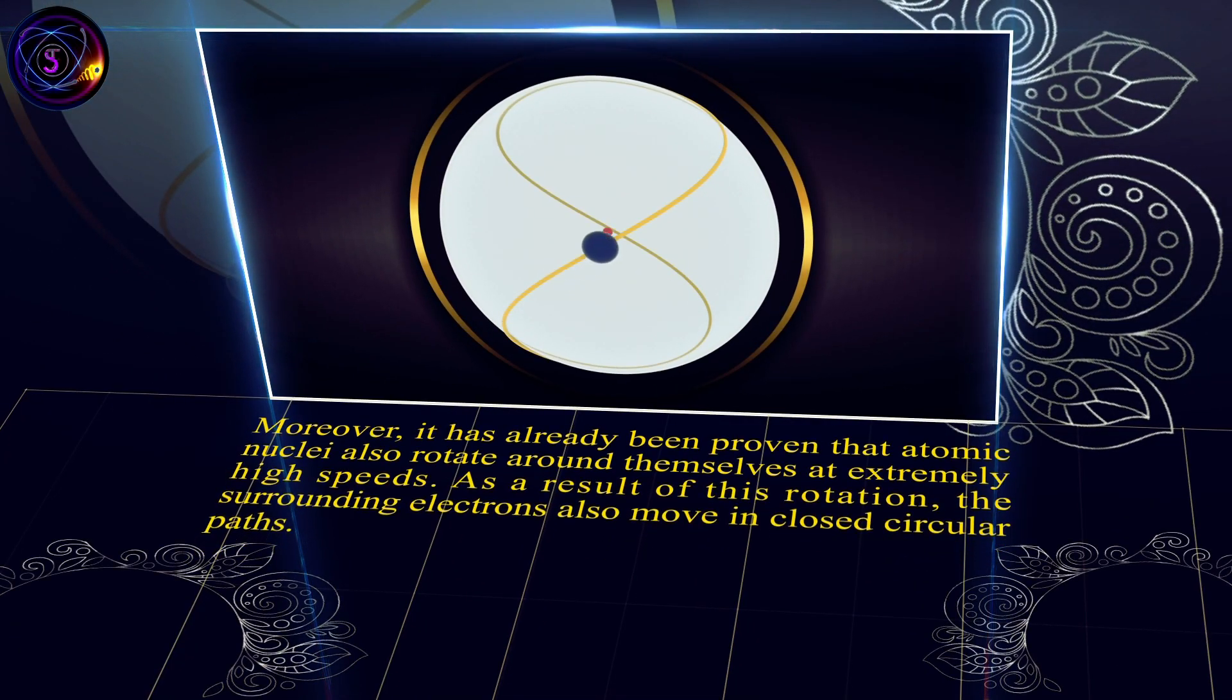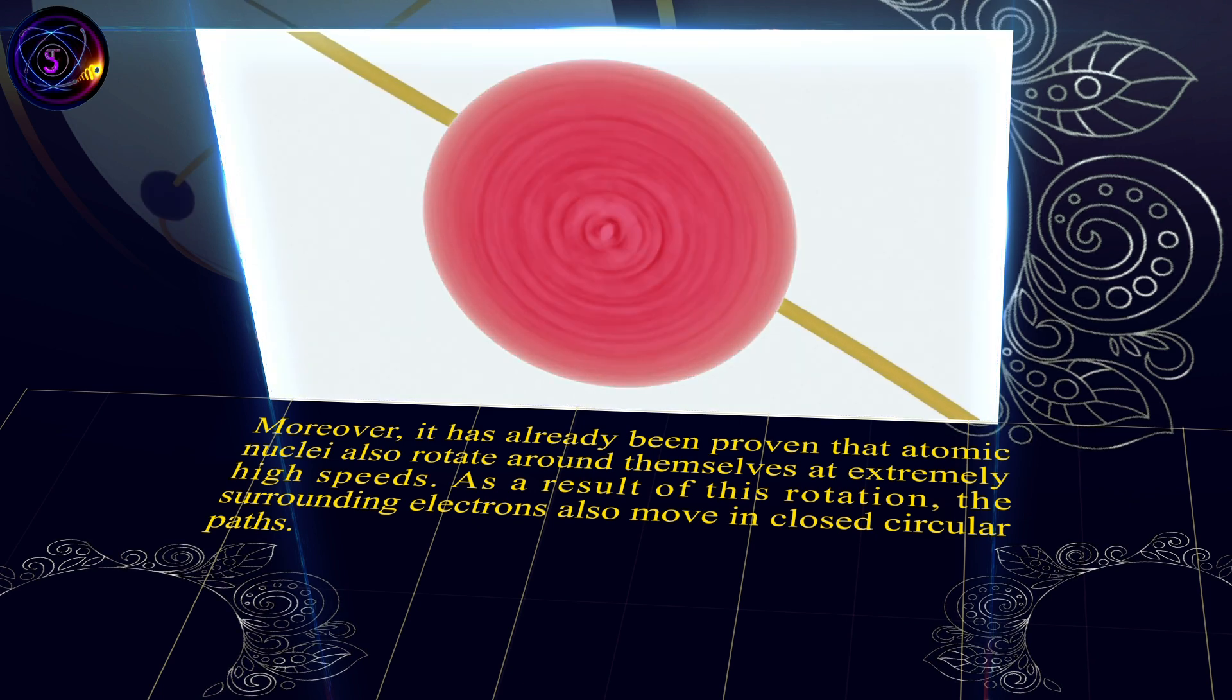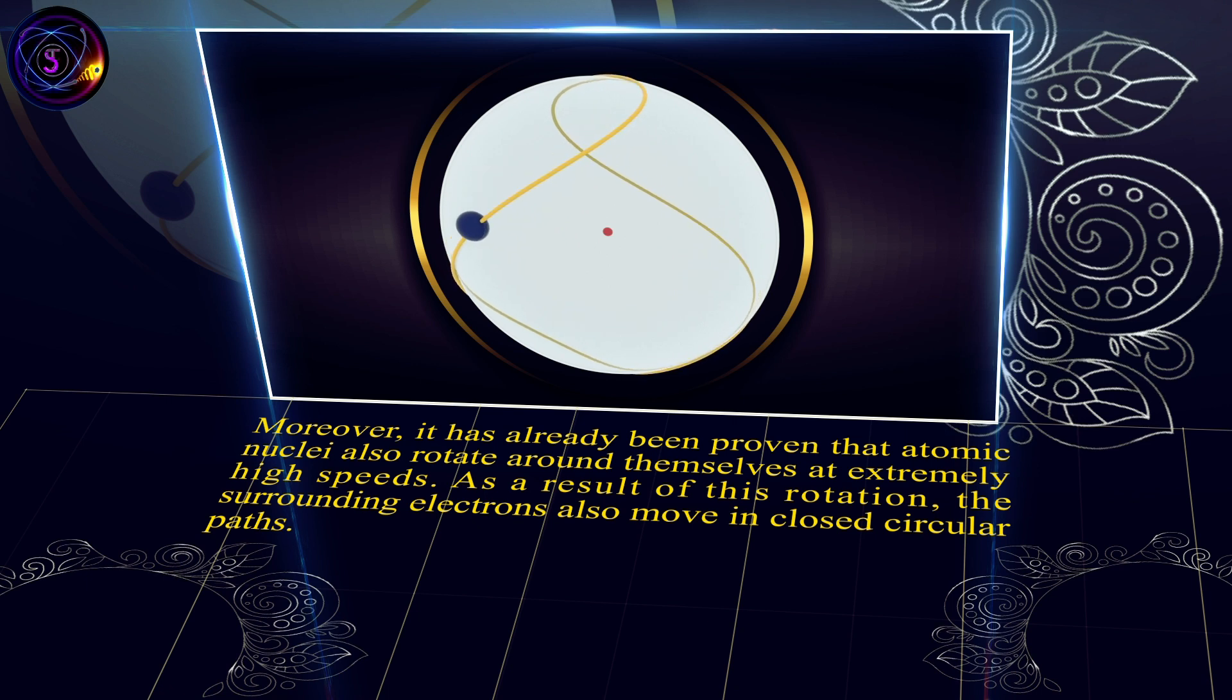Moreover, it has already been proven that atomic nuclei also rotate around themselves at extremely high speeds. As a result of this rotation, the surrounding electrons also move in closed circular paths.